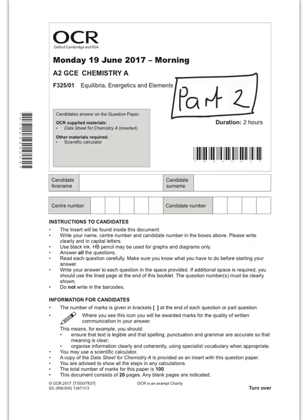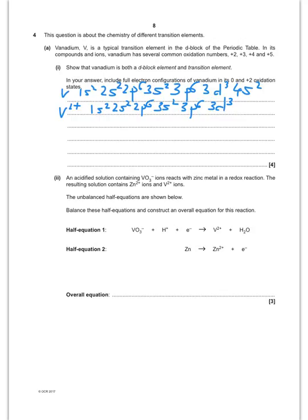Alright, so we're going to move on to part 2 now of the June 2017 paper, Equilibria Energetics and Elements. The first question is asking about vanadium. It's really important that you only talk about vanadium. Don't talk about any other transition elements. They only want you to talk about vanadium. So, show that vanadium is both a d-block element and a transition element. In your answer, include the full electronic configurations of vanadium in its 0 and plus 2 oxidation states.